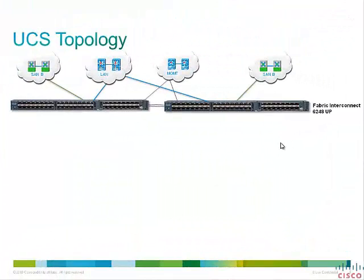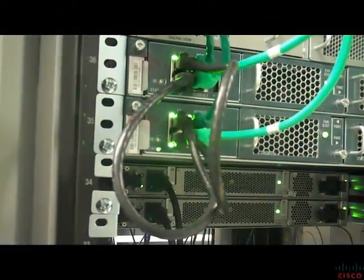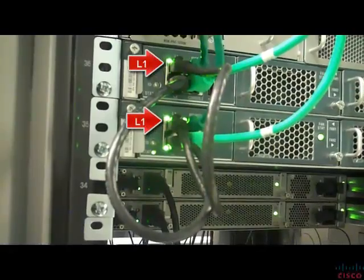This is the topology of the Cisco UCS setup which we are going to configure in this video. There are two Gen2 Fabric Interconnects 6248 UP — UP means unified ports. These Fabric Interconnects, or FIs, are connected to the management network for management access, uplink to the local area network for all Ethernet traffic, and uplink to the storage area network for all FCoE traffic. These two FIs are connected in a cluster configuration which provides high availability. If one Fabric Interconnect becomes unavailable, the other will take over.